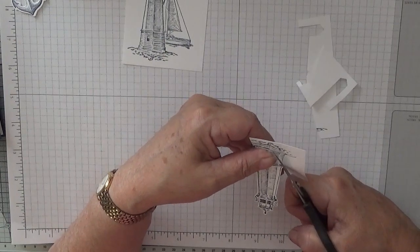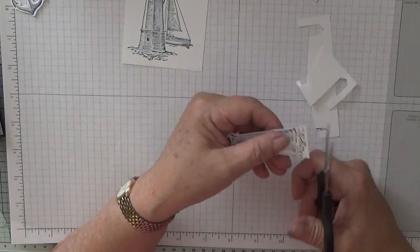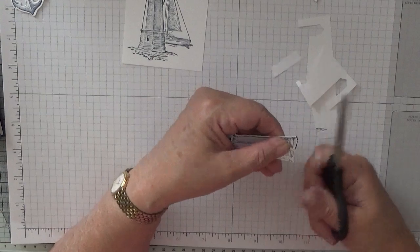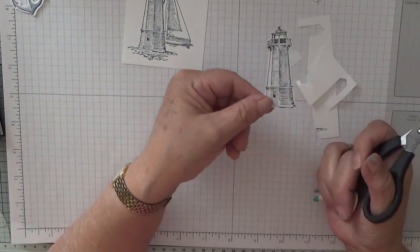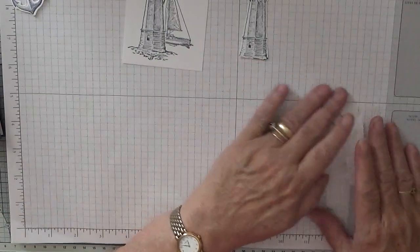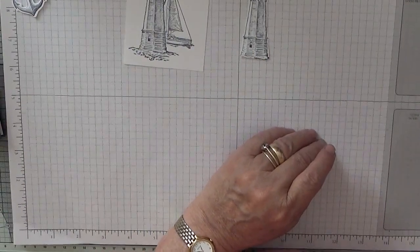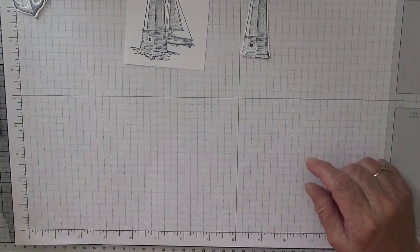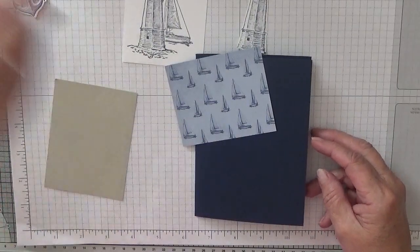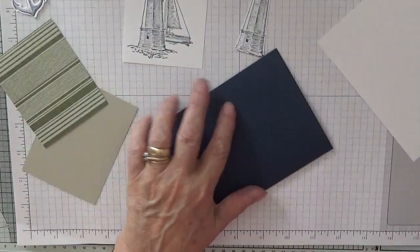Right, when you get to the bottom we don't need the sandy shore so we just cut across the bottom and that's our lighthouse cut. Get rid of this. Right, now we can put this card together. Did I do anything on the inside? No, so finish the card.